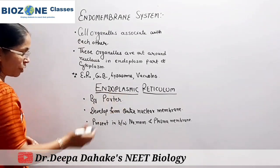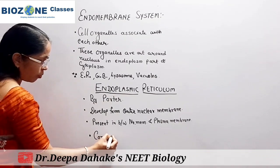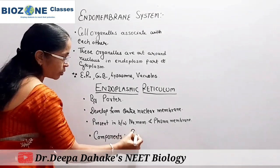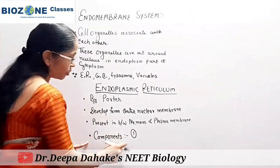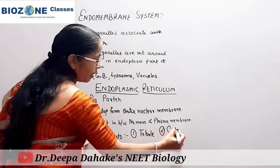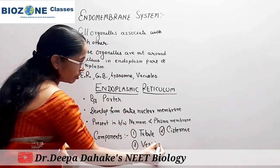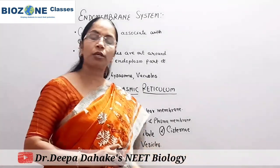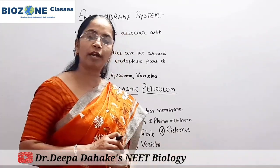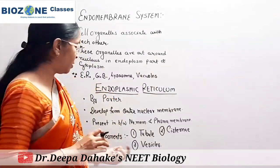The endoplasmic reticulum mainly consists of three components. The three major components are: first, tubule; second, cisternae; and third, vesicles. We will study how tubules and cisternae differ from each other, and when we study the presence of ribosomes in the endoplasmic reticulum — on which component ribosomes are mainly located.